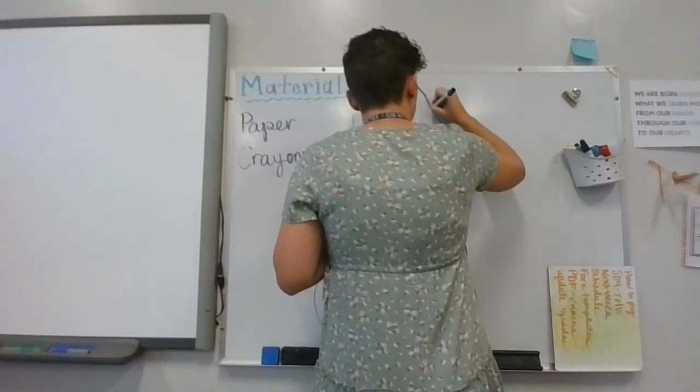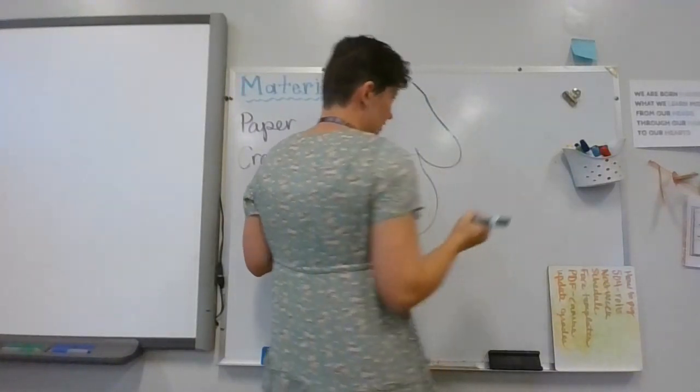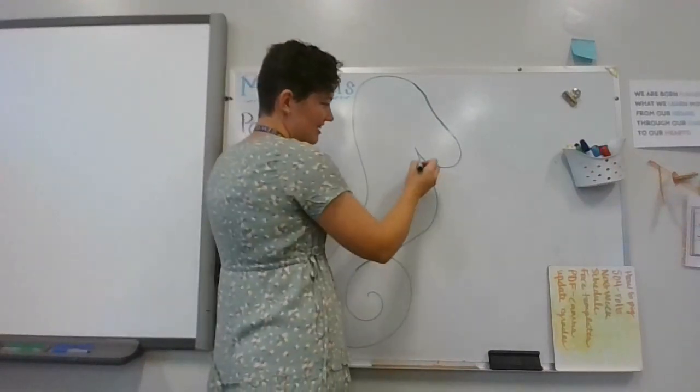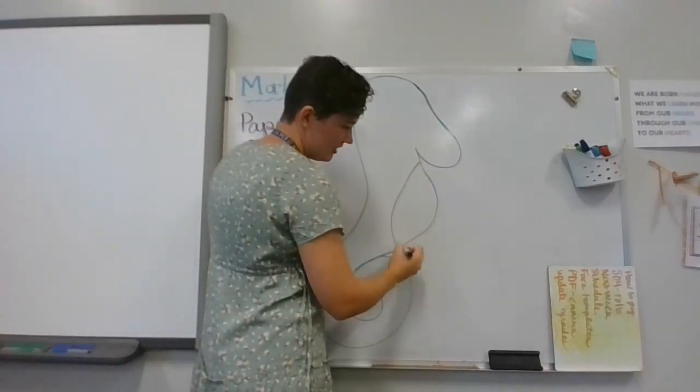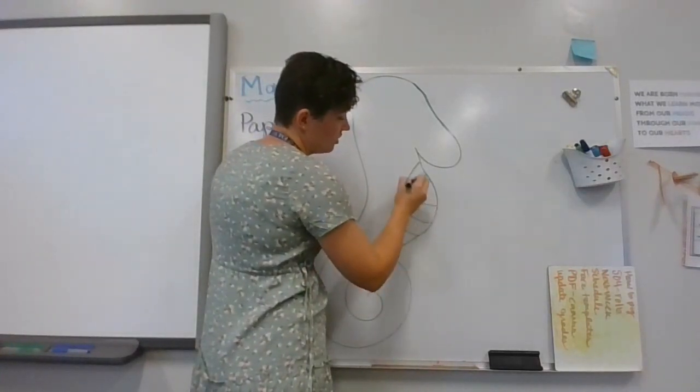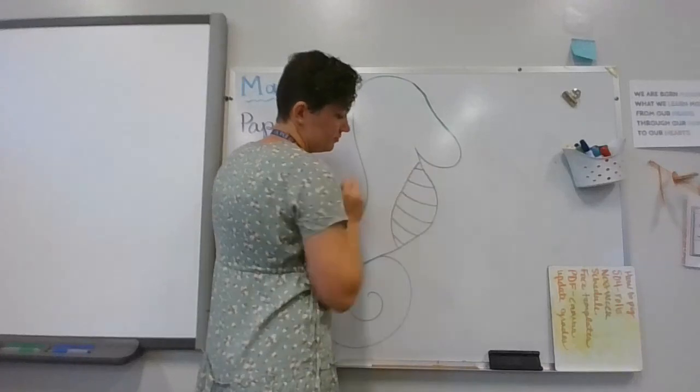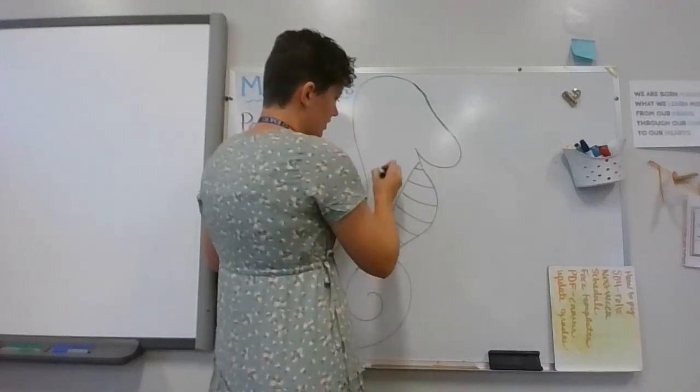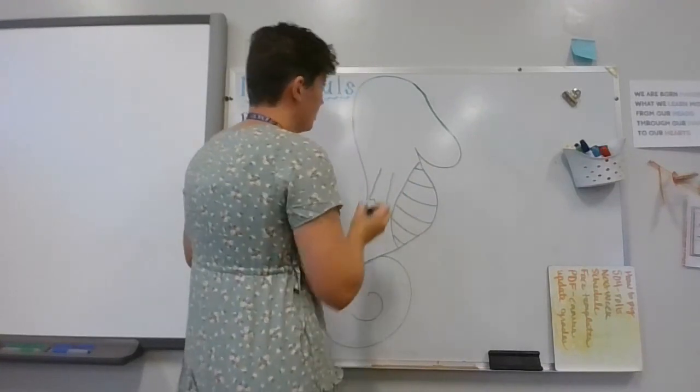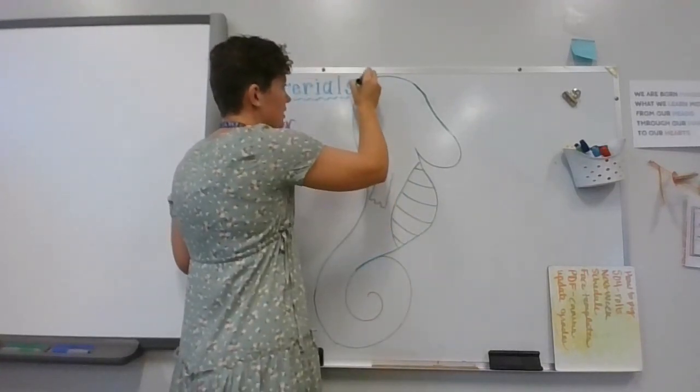Now what you need next is to add a line for its belly. We're going to give it a little fin so it can swim, and do some bumps down its neck.